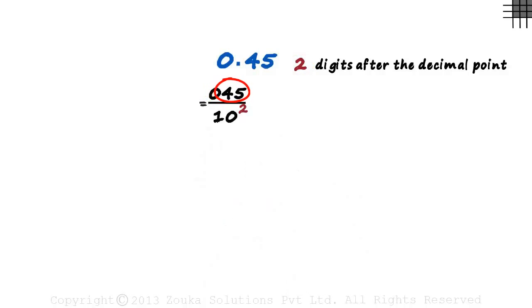This is actually 45. So 0.45 can be written as 45 divided by 10 squared, which can be written as 45 by 100. There's our answer. It's in the P by Q form.